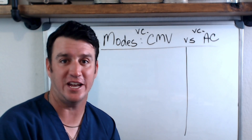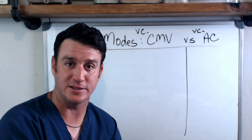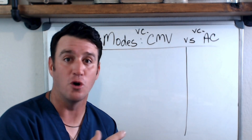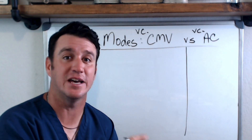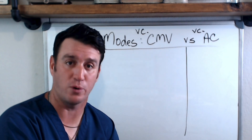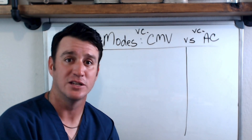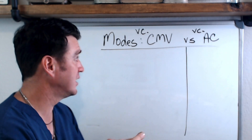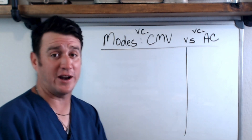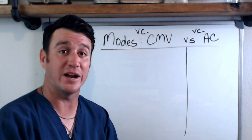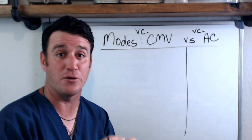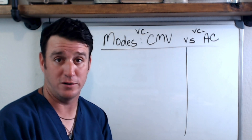We can easily change this to pressure control and have PC-CMV or PC-AC. When we do that, we change our settings — we no longer set a tidal volume; now we set an inspiratory pressure. We're going to start out in volume control and break the settings down first.